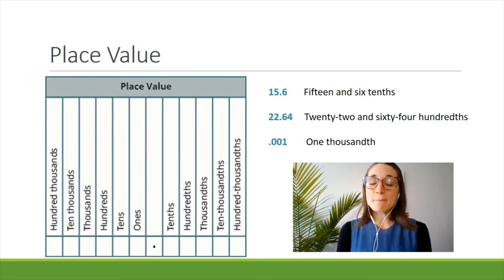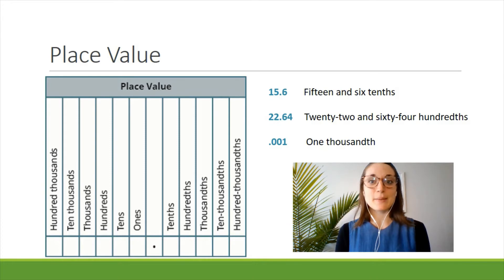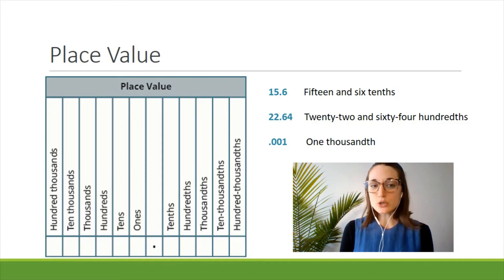Before we can compare decimals, we need to understand their different place values. Here you can see a place value chart with the decimal point in the middle. To the left, you see all the whole number places: the ones, tens, thousands, etc. To the right of the decimal, you see the tenths, hundredths, thousandths, and so on. These all represent fractional numbers, which means it's a part of a whole number.